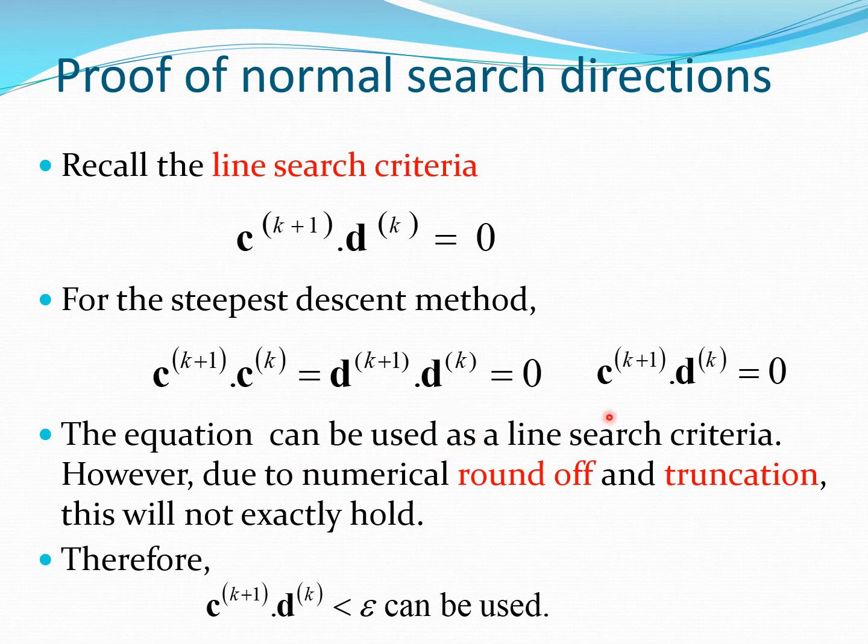Now you could use this equation as a line search criteria—c^(k+1) dot d^k equals 0—but in many cases because of numerical roundoff and truncation this doesn't exactly hold. Whenever you are working on a computer you cannot satisfy equations in this form. So what you do is you say that this dot product should be less than some very small number, which you could specify as 10 to the power of minus 8 or 10 to the power of minus 4, and then you are satisfied with this particular number and say the line search criteria is satisfied at a particular point.